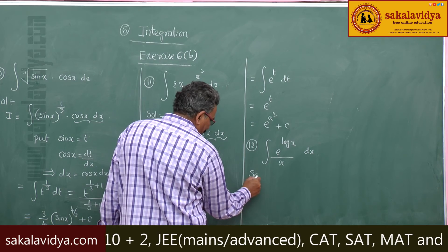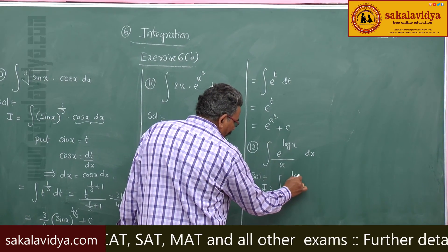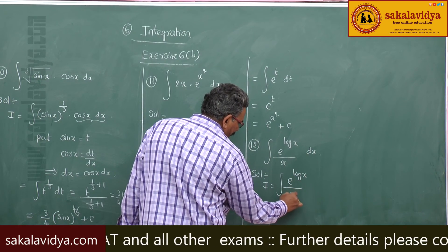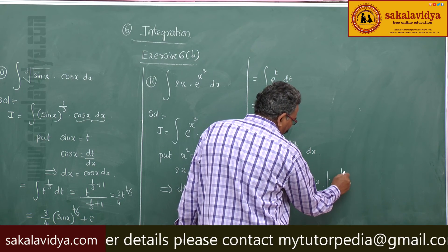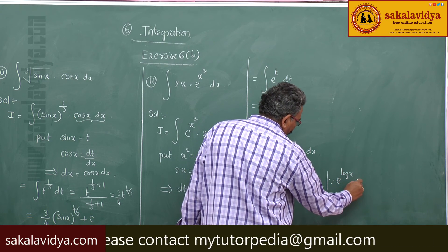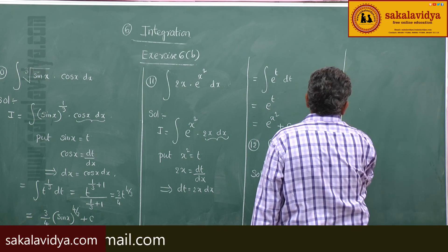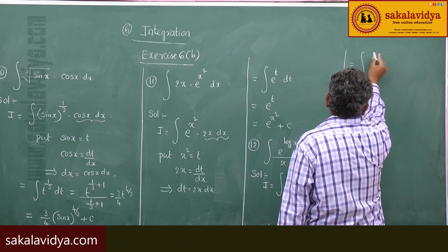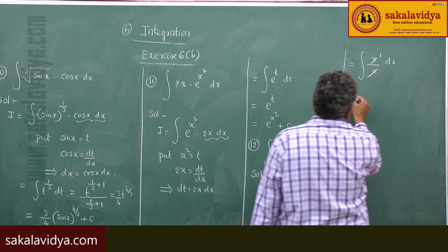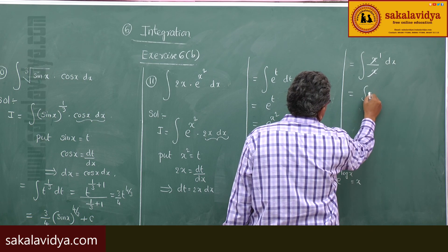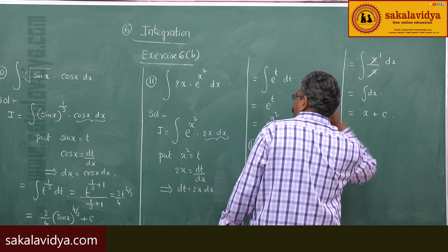Now, let I equal to integral of e to the power log x divided by x dx. Since e to the power log x is nothing but x, this equals integral of x by x dx. Both cancel, giving integral of 1 dx, and the integral is x plus constant of integration.